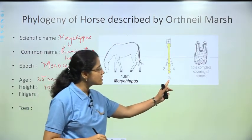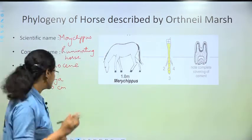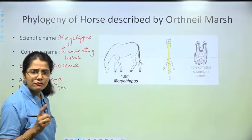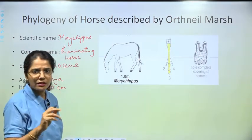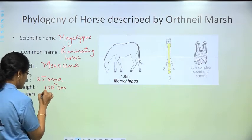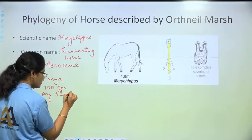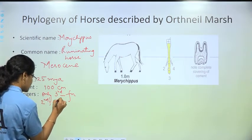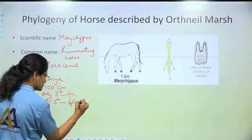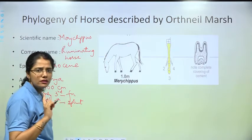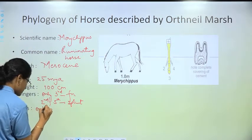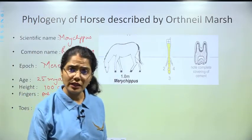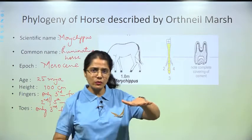In Merihippus, only the third finger was functional. The second and fifth became splint; the first had already been reduced previously. The same applied to toes — only the third was functional.